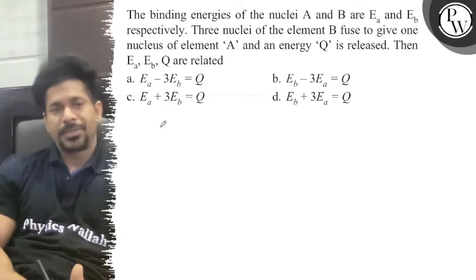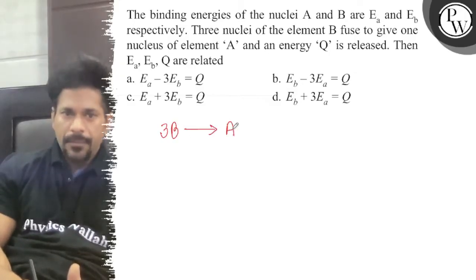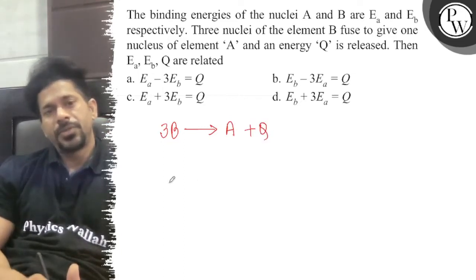So let's see how we solve the question. Thrice of B fused and formed the A and releases the energy Q.